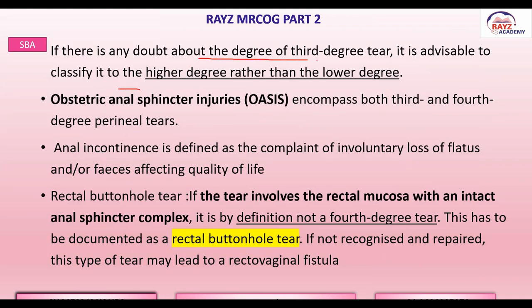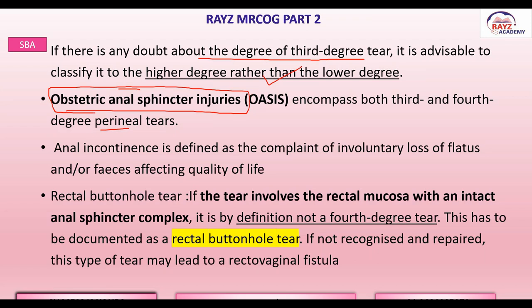If there is any doubt about the degree of third degree tear — whether it is 3A, 3B, or 3C — the guideline says it is always advisable to grade it as a higher degree rather than a lower degree. Third and fourth degree perineal tears comprise obstetric anal sphincter injuries. First and second degree tears are not obstetric anal sphincter injuries, as the anal sphincters are only involved from third degree onward.